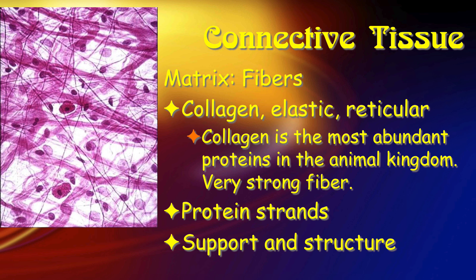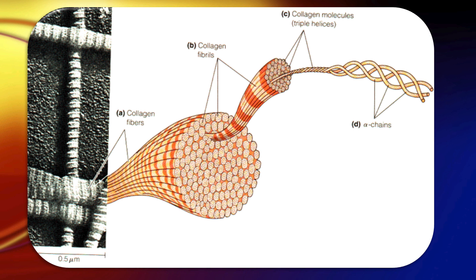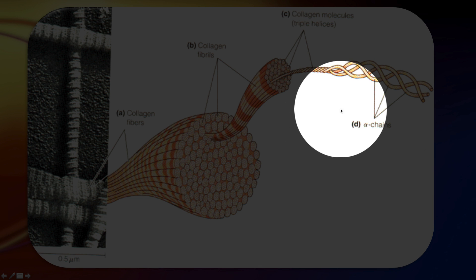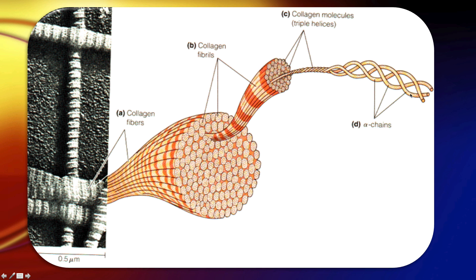Collagen is a very, very strong fiber. Here's why: we start out with strand proteins called alpha chains, and those get twisted together. Then we take a whole bunch of those and twist them together a little bit, and then bundle those up together. It's kind of like a big ship rope — you know how you see strands twisted into bigger strands that are then twisted into even bigger strands. It gives it a lot of strength.